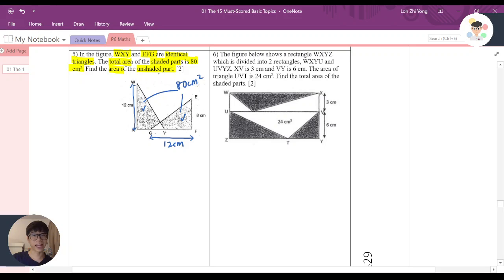They want to find the unshaded part, which is basically what I name as the white region. So the first thing we need to do is find the total. I know that one triangle is 12 cm high and 8 cm as its length.